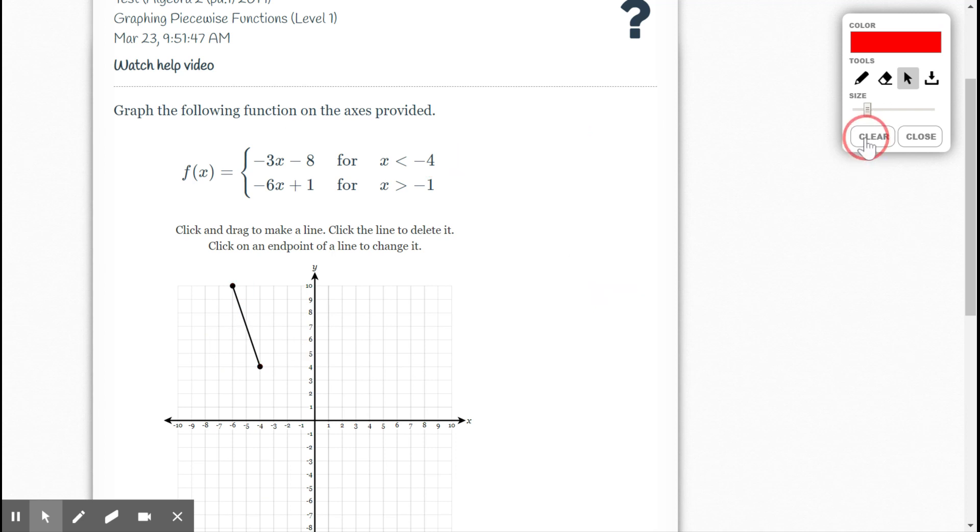Let me clear my mess. Now, we just graphed this. Now we just need to work on the endpoint. So this is for all x values less than negative 4. So this needs to be hollow, because it doesn't actually equal this at negative 4.